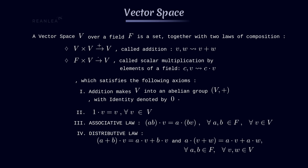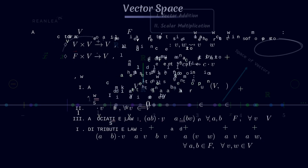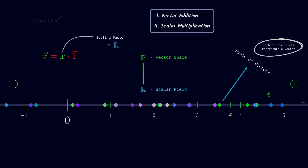The vector space also follows the associative law and the distributive law. For example, ℝ as a collection of vectors is a vector space over the field ℝ, and ℝ is a one-dimensional vector space over ℝ.